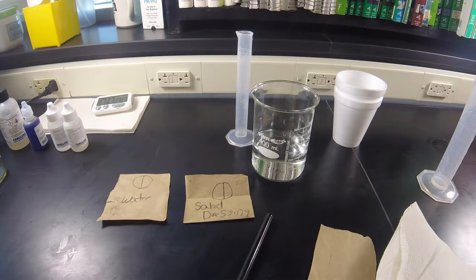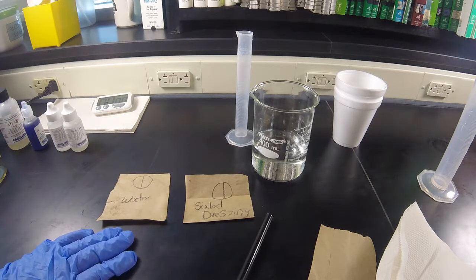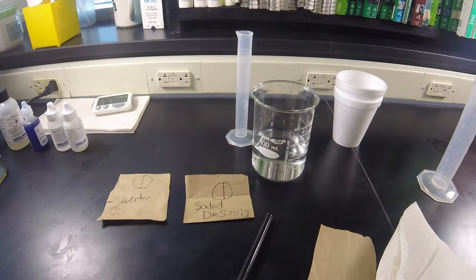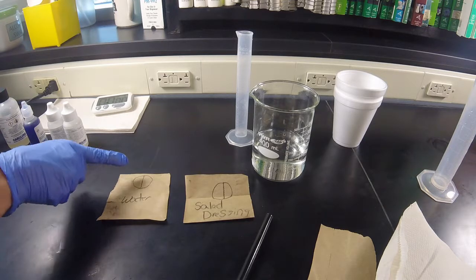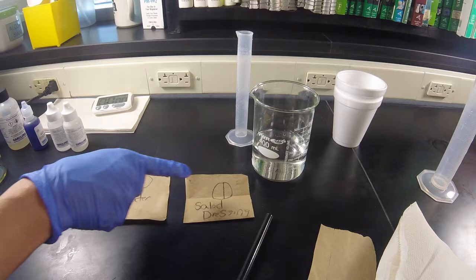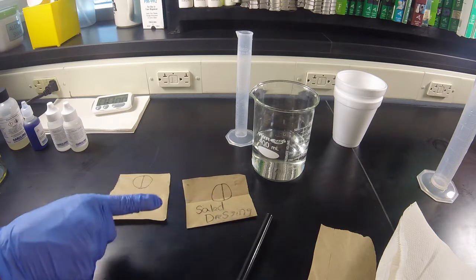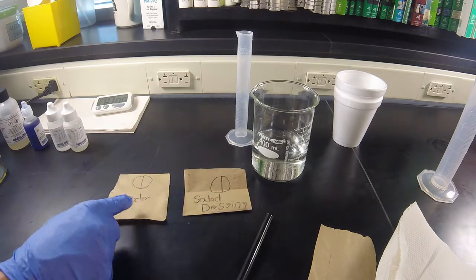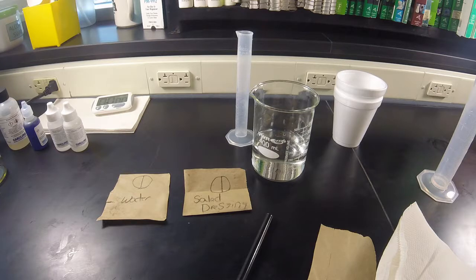For the fat test, I have cut two pieces of brown paper bag into approximately 8 by 8 centimeters. It can be a little smaller or a little larger. On them I have drawn a diameter of 2.5 centimeters, and I've labeled them with the two substances that I will be using.